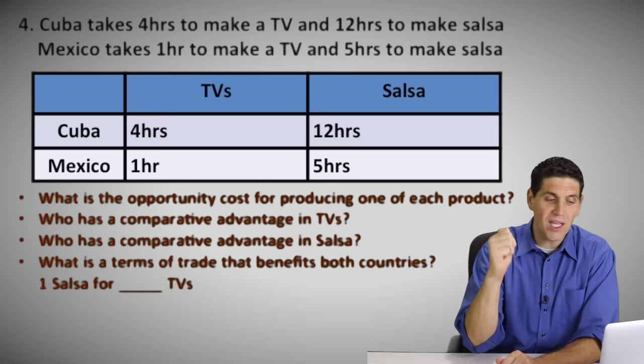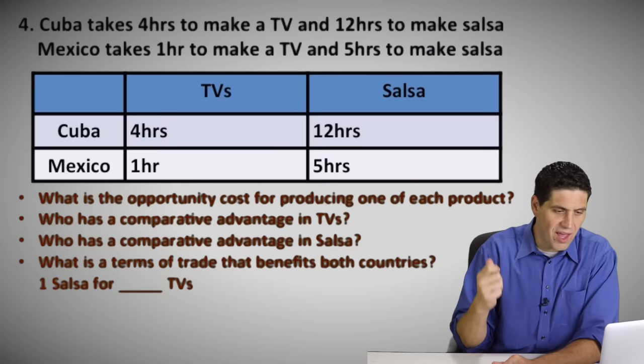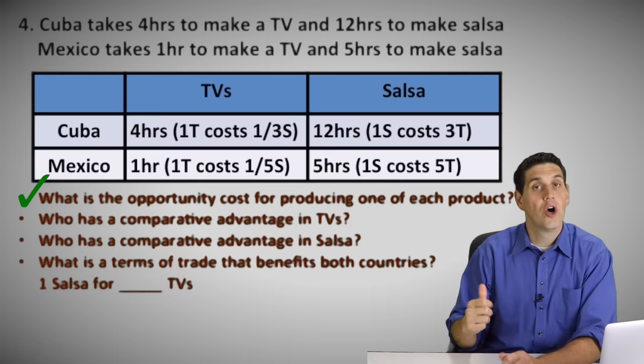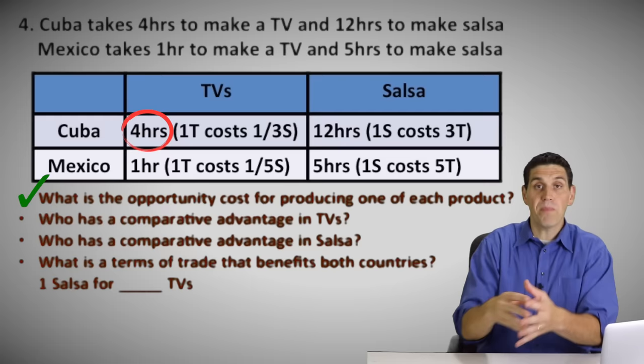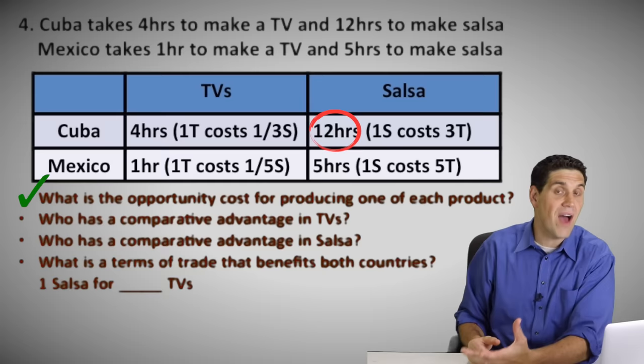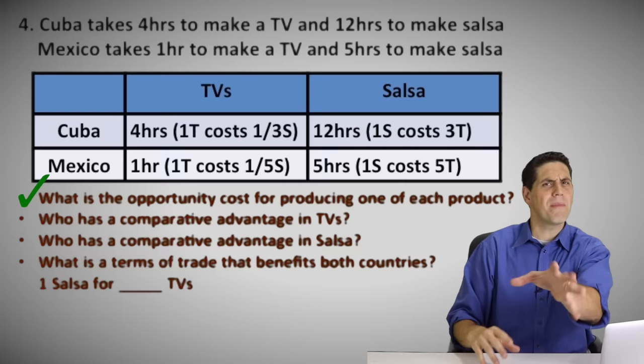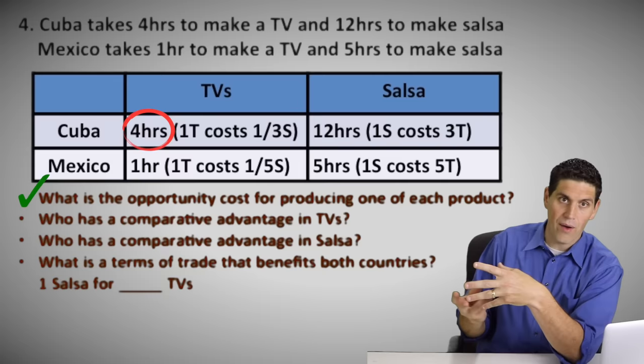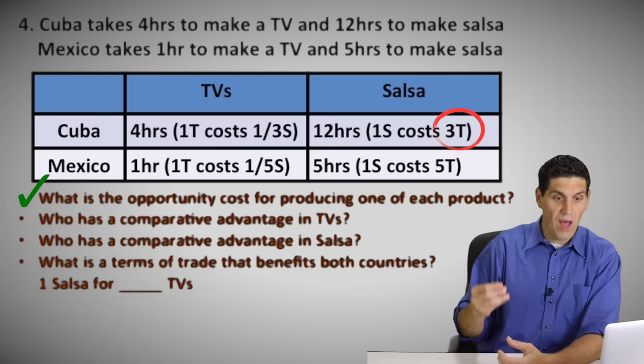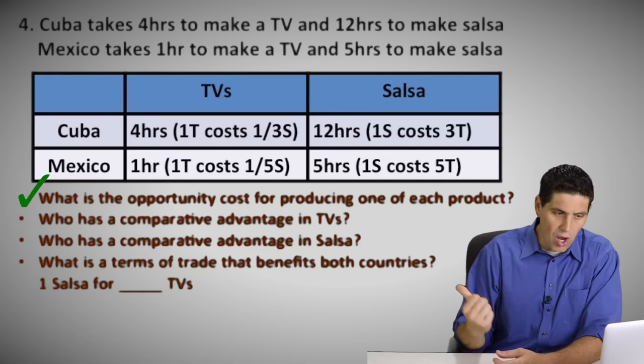Let's go nice and slow — we're talking about hours. These are the same exact numbers as the last question, on purpose, to show you the numbers aren't what's changing — it's the concept. This is an input or hours question. We've got Cuba and Mexico. If Cuba spends four hours producing TVs, how much salsa could they have produced in those four hours? The answer is one-third of a salsa. If you spend four hours doing one thing and it takes 12 hours to do the other, you gave up one-third of the salsa you could have made. The other side: each one salsa for Cuba is the three TVs they could have made. For Mexico, each TV costs one-fifth of a salsa and each salsa costs five TVs.